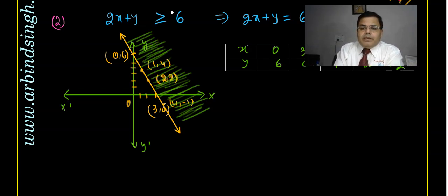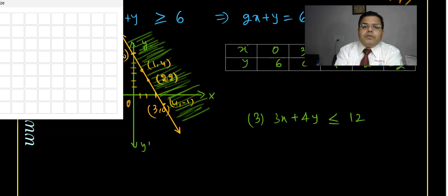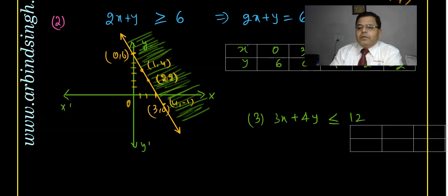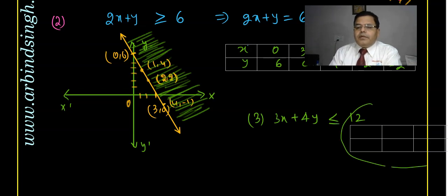The third question is: 3x plus 4y is less than or equal to twelve. Again, we can plot the graph for the equality 3x plus 4y equal to twelve.